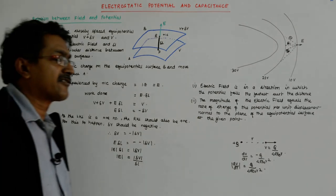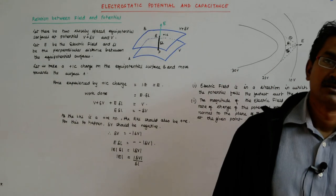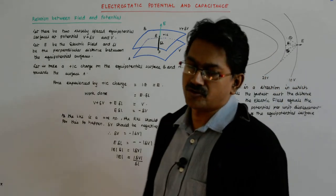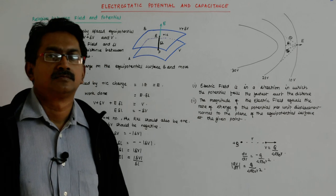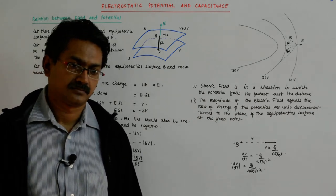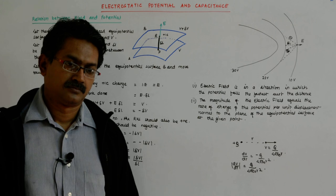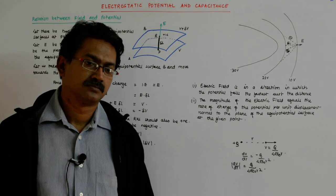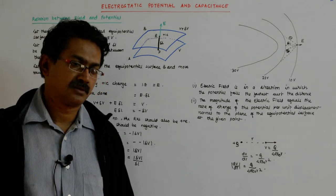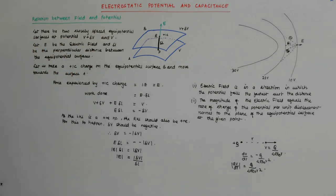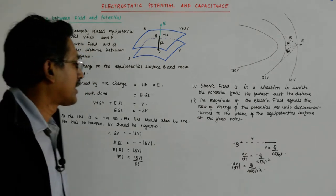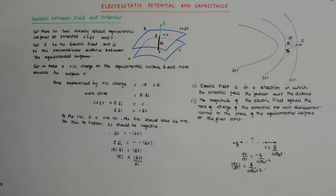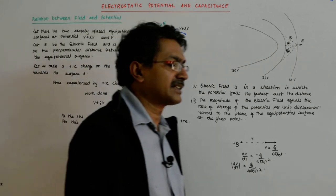If it would have been potential energy, then you would have seen that minus dV upon dr would have become a force. That draws from class eleventh. We will soon come to that — if there is an electric field already and you put something here, what happens to the potential energy in the presence of an external electric field?